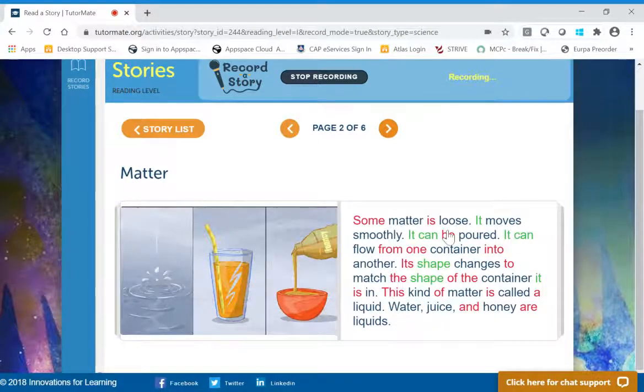Some matter is loose. It moves smoothly. It can be poured. It can flow from one container into another. Its shape changes to match the shape of the container it is in. This kind of matter is called a liquid. Water, juice, and honey are liquids.